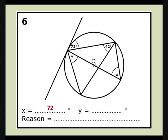Firstly, the tangent and radius meet at right angles, so y is next to a 42 degree angle, and therefore y is 48 degrees.